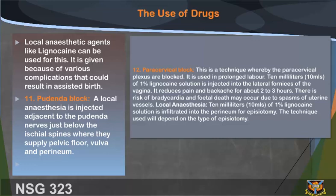12. Paracervical block: this is a technique whereby the paracervical plexus are blocked. It is used in prolonged labor. 10 mL of 1% lignocaine solution is injected into the lateral fornices of the vagina. It reduces pain and backache for about 2–3 hours. There is a risk of bradycardia and fetal death may occur due to spasm of uterine vessels. 13. Local anesthesia: 10 mL of 1% lignocaine solution is infiltrated into the perineum for episiotomy. The technique used will depend on the type of episiotomy.